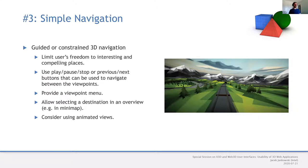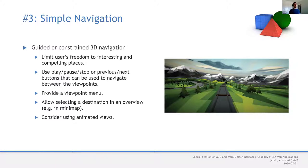Consider using animated views. Viewpoints are typically designed as static placements of a camera. I did a study giving users the option to have movement at a viewpoint or not, and almost all users wanted animated views. When you select a viewpoint, the camera very slowly moves around the point of interest, showing that it's actually 3D — it's not static.